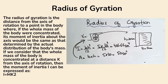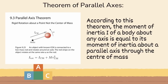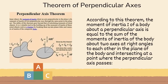You can find the radius of gyration of any object if you know how to find its moment of inertia and its area — just put in the values and take the square root. Theorem of parallel axis: the moment of inertia of a body about any axis is equal to its moment of inertia about a parallel axis through the center of mass. Theorem of perpendicular axis: the moment of inertia of a body about a perpendicular axis is equal to the sum of the moments of inertia about two axes at right angles to each other in the plane of the body and intersecting at a point where the perpendicular axis passes.